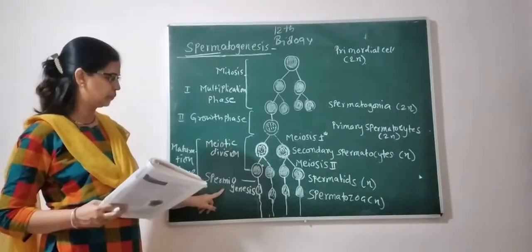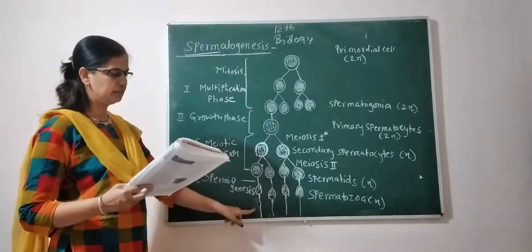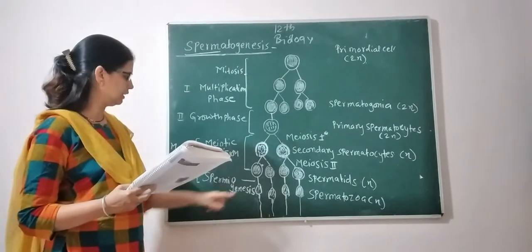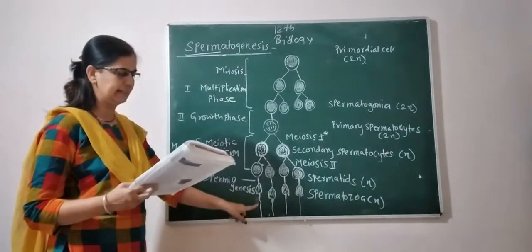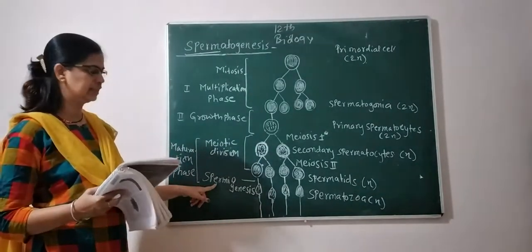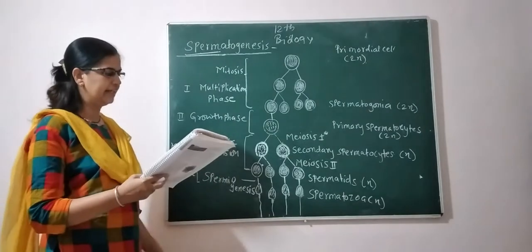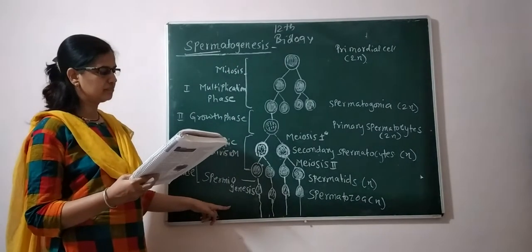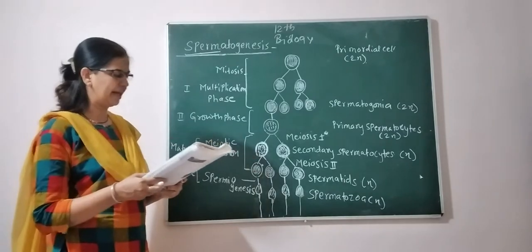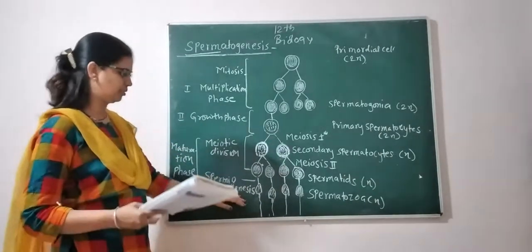This transformation is called spermiogenesis. The sperm head remains attached to the Sertoli cells, with their tails hanging in the lumen of the seminiferous tubules. During spermiogenesis, the length of spermatids increases, primary and distal centrioles form, mitochondria become spirally coiled, and the acrosome is formed from the Golgi complex.